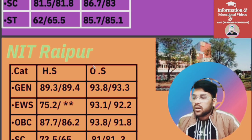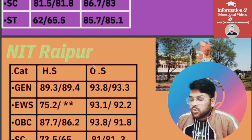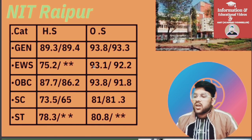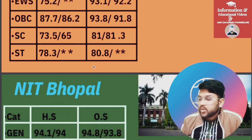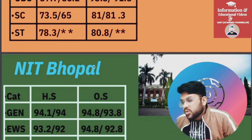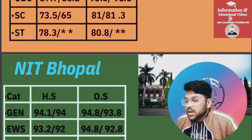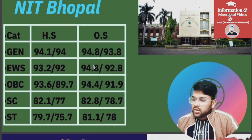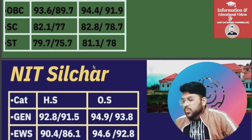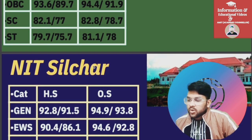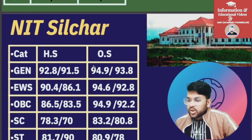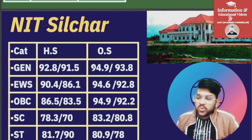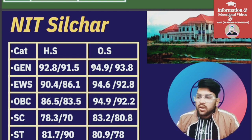For NIT Raipur: General 93.8, EWS 93.1, OBC 93.8, SC 81, ST 80.8 percentile. For NIT Bhopal: General 94.8, EWS 94.8, OBC 94.4, SC 82.8, ST 81.1 percentile. For NIT Silchar: General 94.9, EWS 94.9, OBC 94.6, SC 83.2, ST 80.9 percentile.